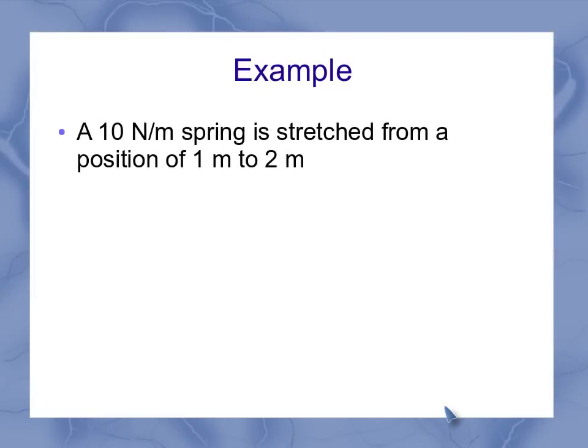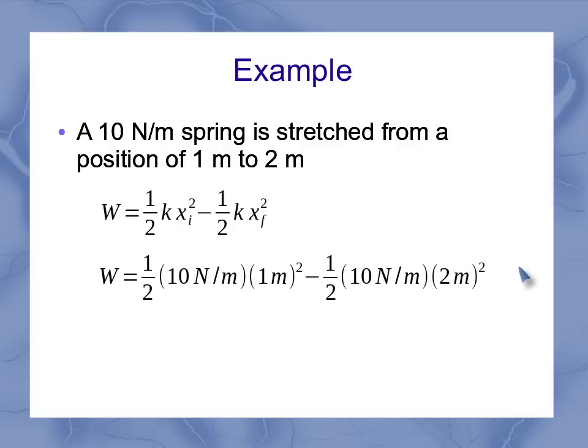So let's look at applying that force. Let's say I've got a 10 newton per meter spring, so that's my k value. And it's stretched from 1 meter to 2 meters. My general work equation here is going to be the same one that I looked at from both the calculus and the area. And plugging in my specific values, what I find is that I end up with a minus 15 newton meters.